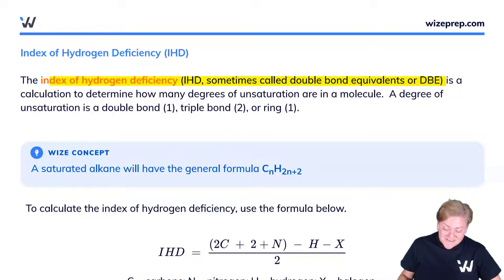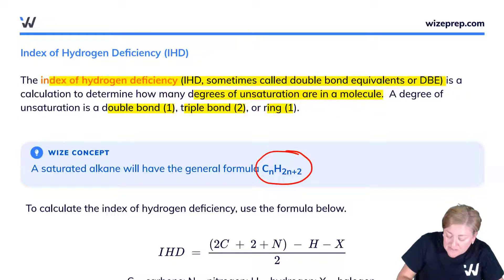All of it is connected to a calculation to determine how many degrees of unsaturation are in a molecule. Remember that unsaturation is multiple bonds or rings. A degree of unsaturation can be a double bond, which uses up one, a triple bond, which uses up two, or a ring, which uses up one. Now, a saturated alkane has a general formula of CnH2n+2, where n here is going to be an integer. If this is not the molecular formula, that's going to mean that we have an element of unsaturation.